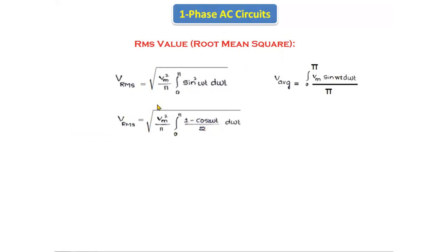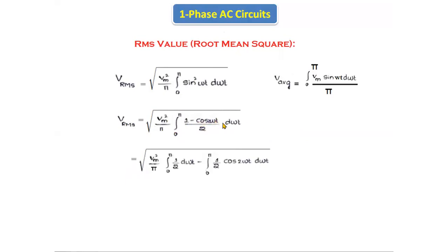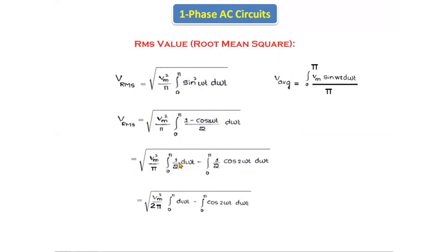Substituting, V_rms = √[ (Vm²/π) × integral from 0 to π of (1 − cos(2ωt))/2 dωt ]. Separating the terms and taking 1/2 as a common factor, we get √[ (Vm²/2π) × (integral from 0 to π of dωt − integral from 0 to π of cos(2ωt) dωt) ].